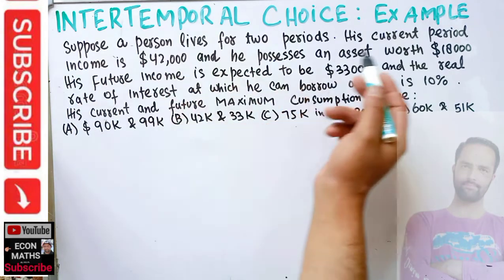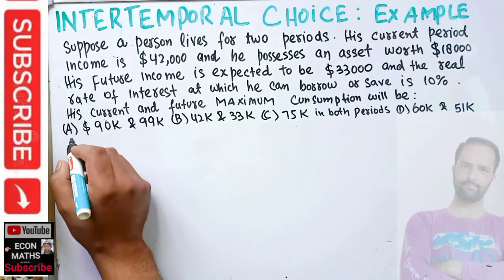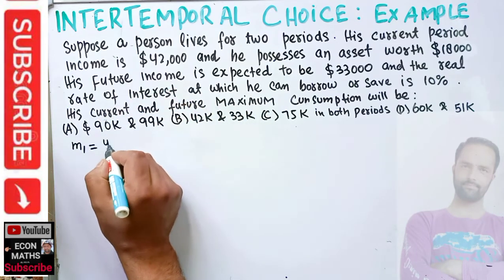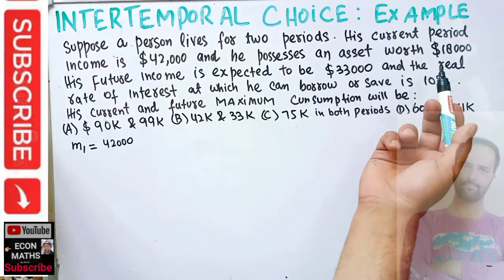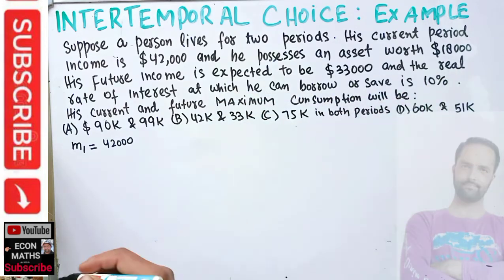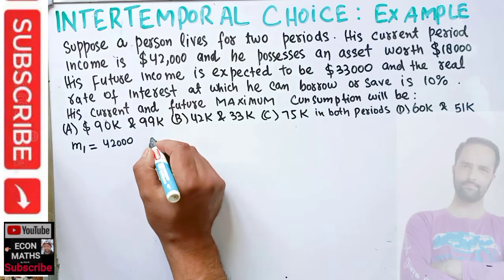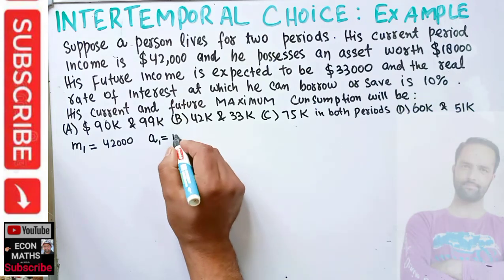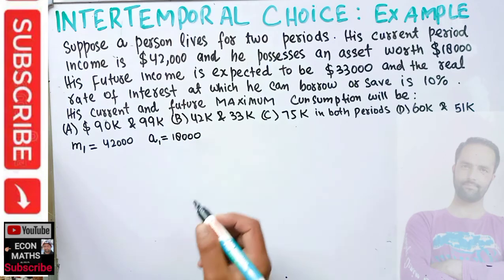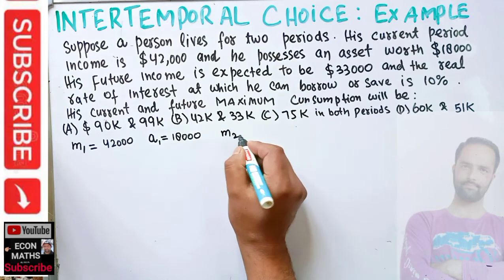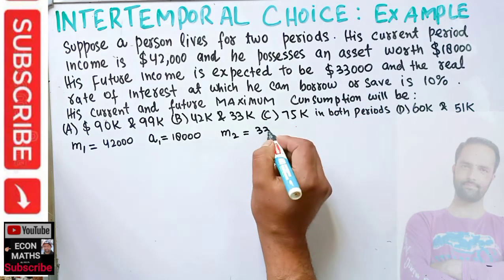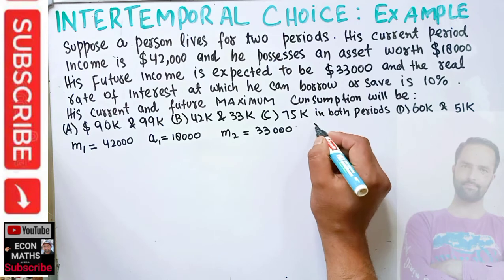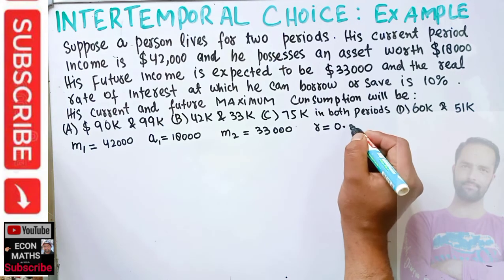Let us write down what we are given. In the first period, M1 — income in the first period — is 42,000 dollars. He also possesses an asset A1 equal to 18,000 dollars. In the second period, M2 equals 33,000 dollars. He can borrow or save at the real interest rate of 10%, written as r = 0.1.